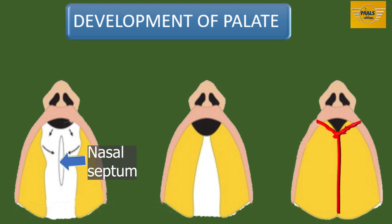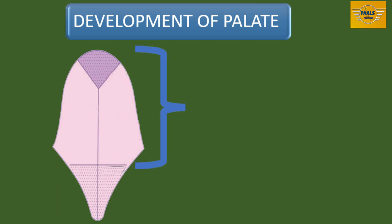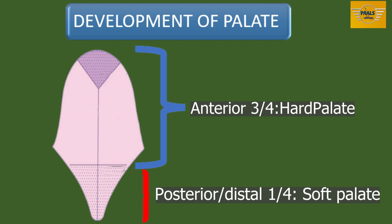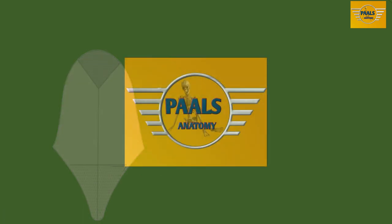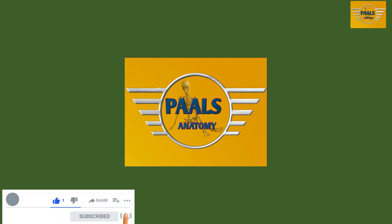The third stage of fusion is the fusion of the palatal processes with the nasal septum. In the definitive palate, the anterior three-quarters of the permanent palate is ossified in membrane and is called the hard palate, while the distal one-quarter is the un-ossified part that forms the soft palate, which has a small inner part called the uvula. This is where we stop in part one of the lecture on development of the face.